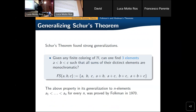Starting from Schur's theorem, many generalizations have been found. A natural question is to ask if one can find n different elements so that all partial sums from these elements belong to the same piece of any given partition. This is in fact the case, and Folkman proved in 1970 that this property holds for any given n — meaning for any given n and any given finite partition of the natural numbers, one can always find n numbers so that all possible sums of distinct elements from these n elements belong to the same piece of the partition.